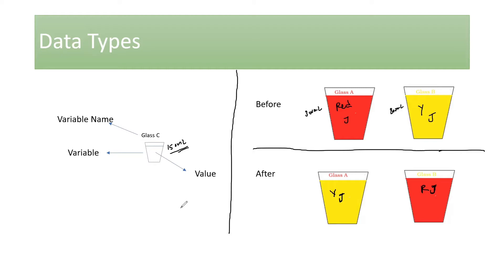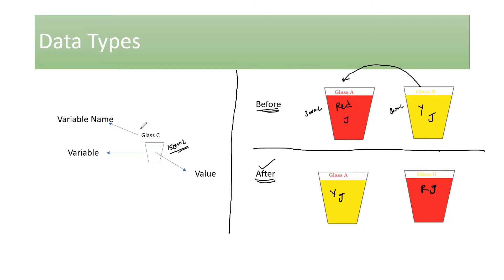With this setup, will you be able to do the same process we discussed previously — transferring the liquids to the after-state using glass C? Pause if you need a moment. The answer is no — since glass C is half the size, I cannot use the same approach of pouring A into C, then B into A, then C into B, because that worked only when glass C's capacity equaled glass A and glass B.